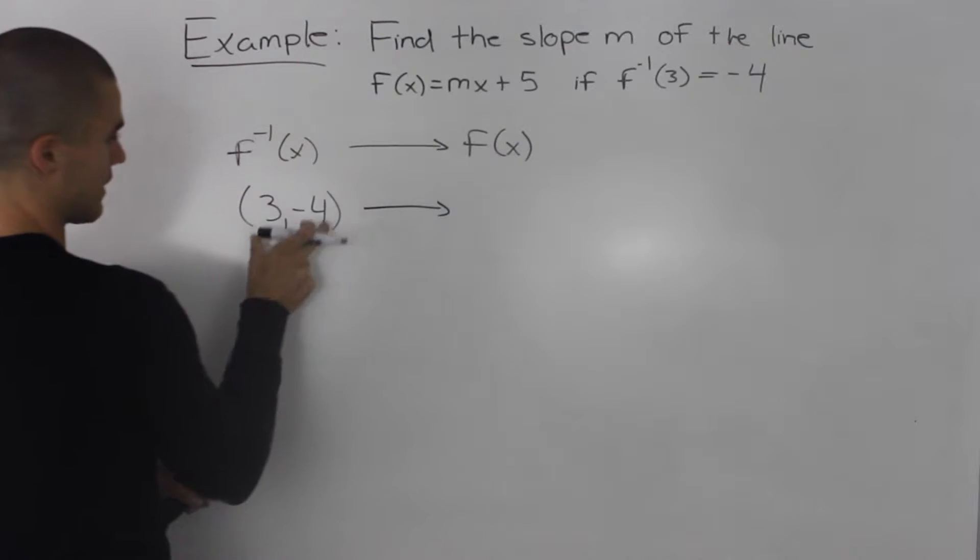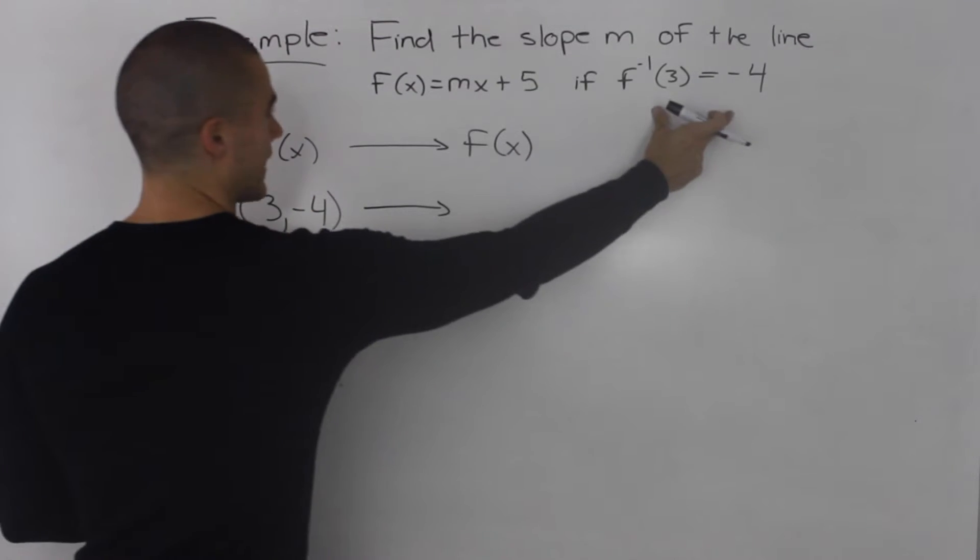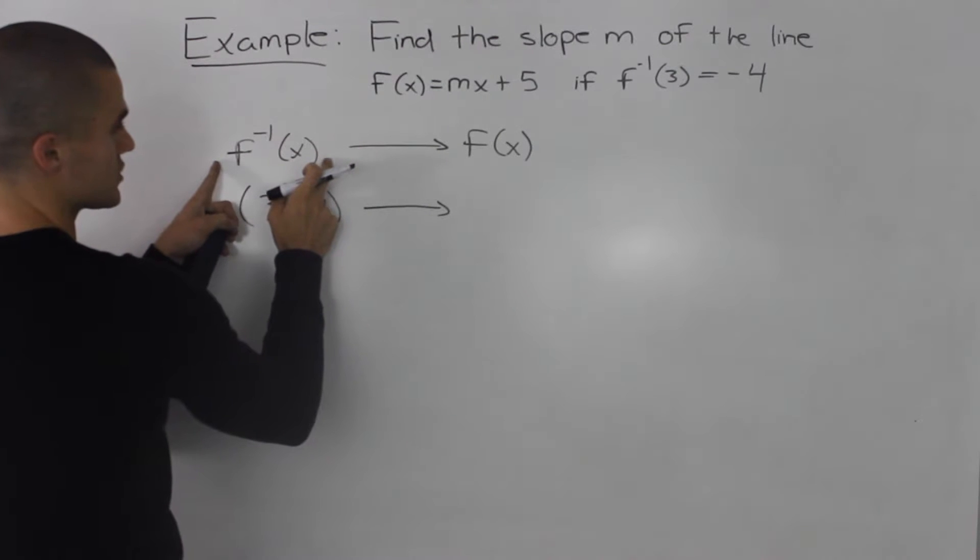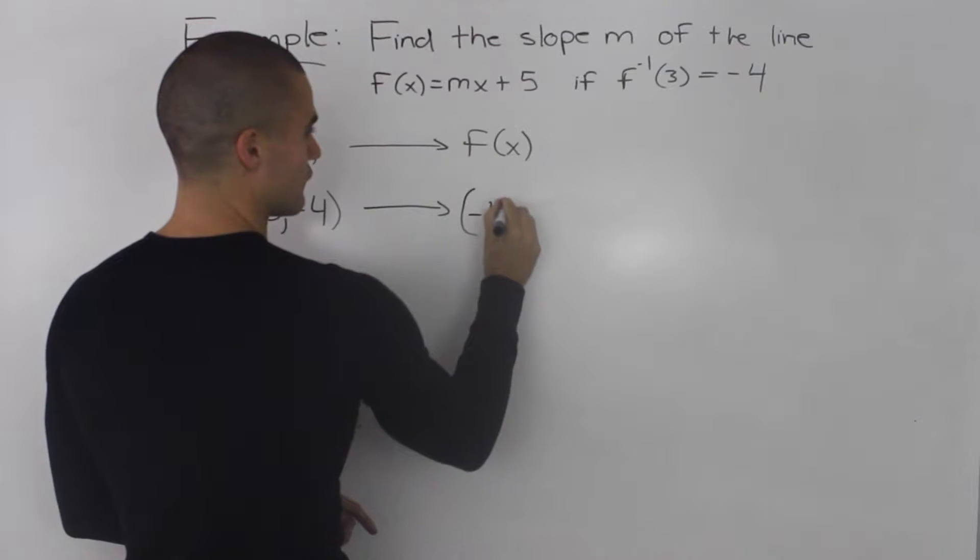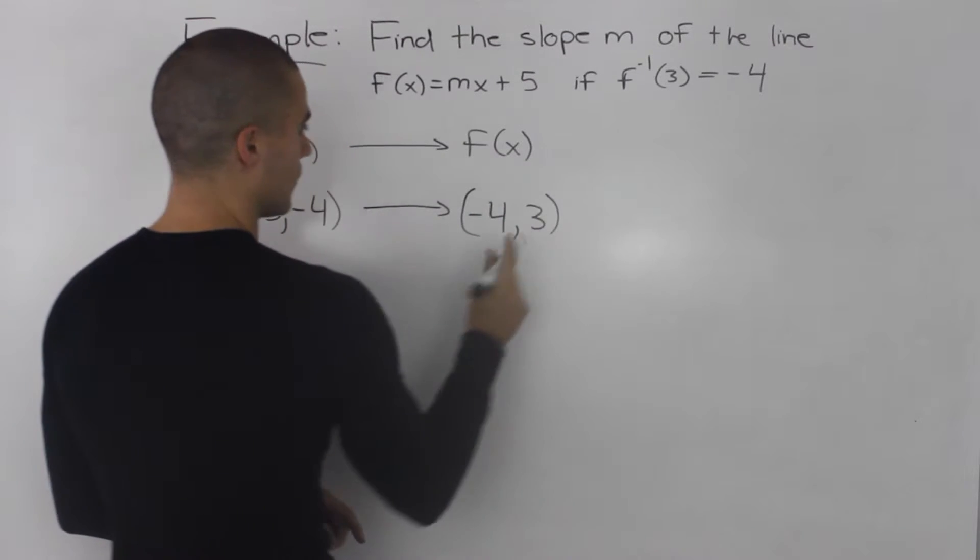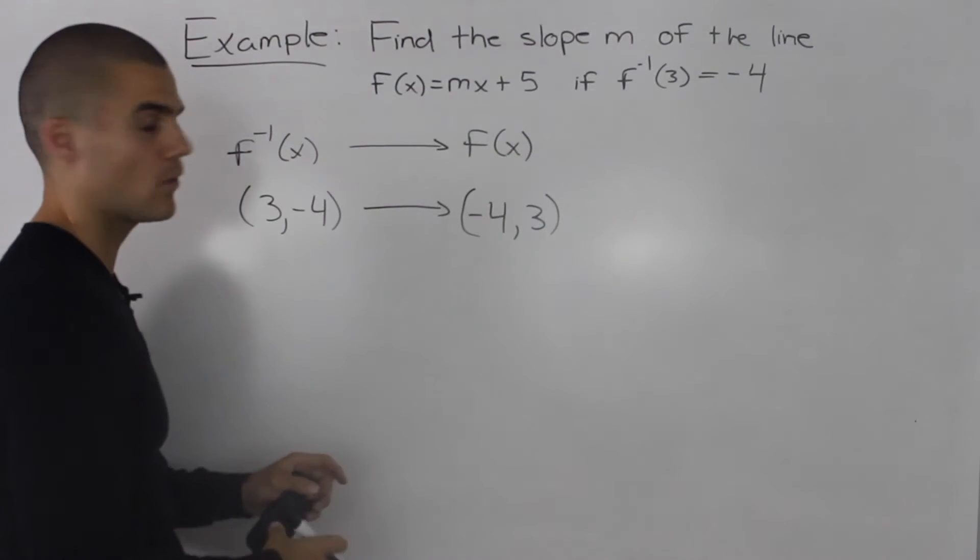So if this point (3, -4) is on the inverse, then the corresponding point on the original function would be (-4, 3). Notice how I changed the x and y values.